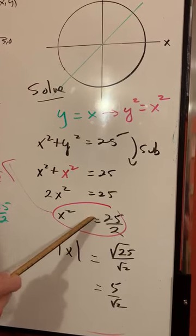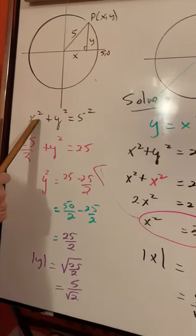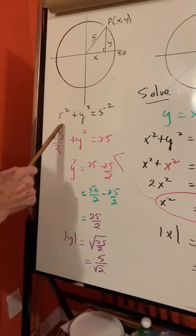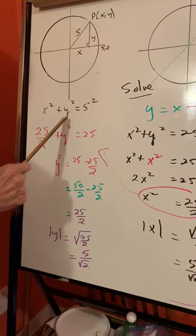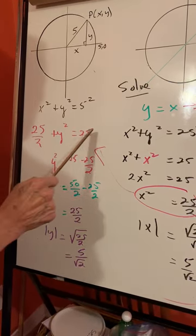Now we want to find y. We're going to take this and put it in here. So y's x squared will be 25 over 2. That's the same and that's the same. Transpose this to the other side.